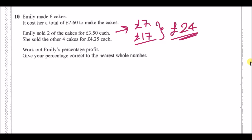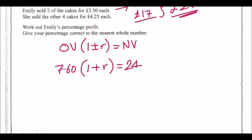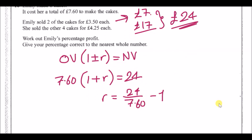To find Emily's percentage profit, use the formula: old value × (1 + r) = new value. The old value is £7.60 (the cost) and the new value is £24 (revenue). Dividing: 1 + r = 24 ÷ 7.60, then subtract one to get a decimal of 2.50-something. Multiply by 100 to get approximately 216% profit.